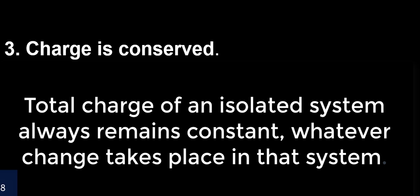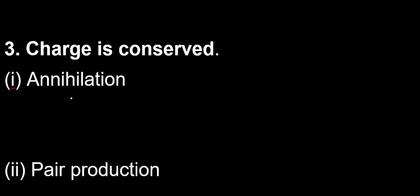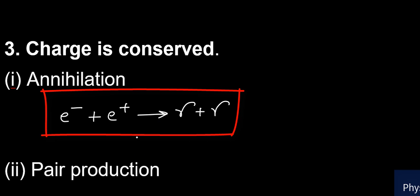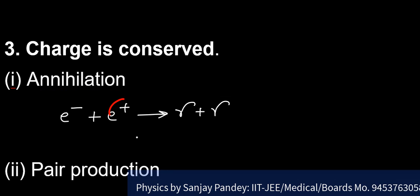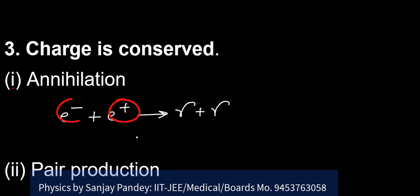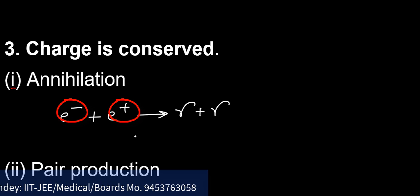In annihilation, when an electron charge minus e and its antiparticle, the positron charge plus e undergoes an annihilation process, two gamma photons are produced. e minus for electron, e plus for positron goes to gamma plus gamma. Here we see that net charge on left side is 0, plus 1 and minus 1 is equal to 0 and charge in right side is also 0.